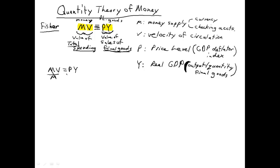MV equals PY. Let's solve for V by dividing both sides by M. V simply equals P times Y divided by M. PY, remember, is your total final sales. The value of total final sales of goods divided by the money supply.